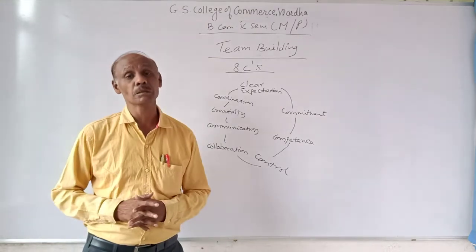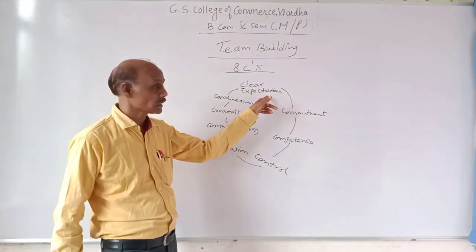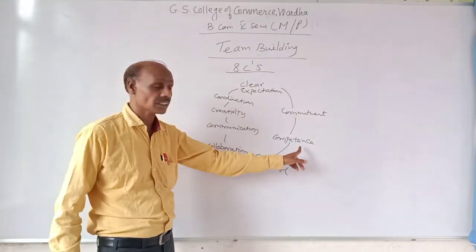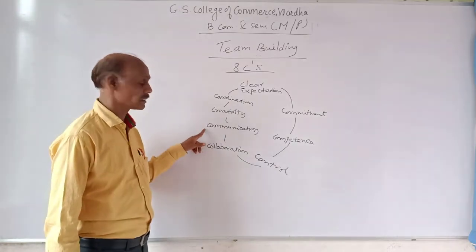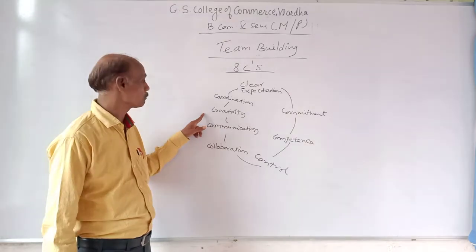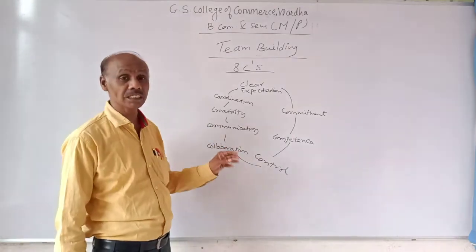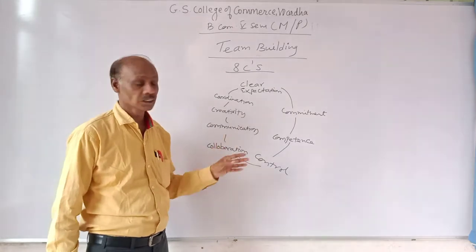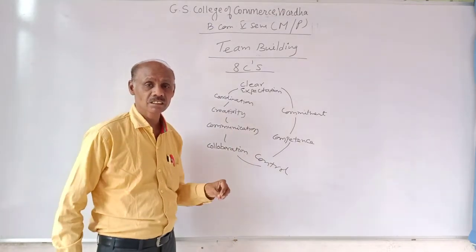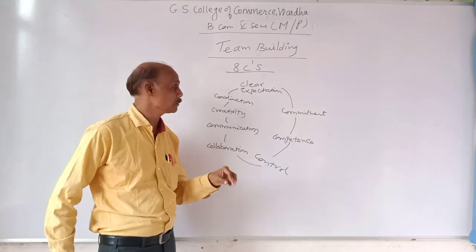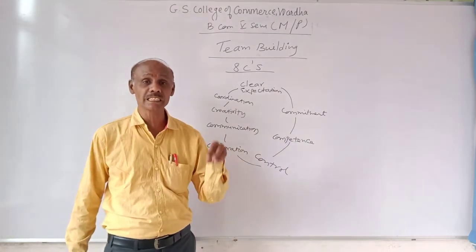Now we will go for what are the essential requirements on the part of effective team building. This is called the Eight C's principle. The eight C's are: clear expectation, commitment, competence, control, collaboration, communication, creativity, and coordination. Regarding clear expectation — every member of the team should have a clear knowledge of what outcome is expected from the team towards the organization.